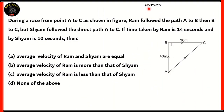This question is on physics. During a race from point A to C, as shown in the figure, Ram followed the path A to B then B to C, but Shyam followed the direct path A to C. The time taken by Ram is 14 seconds and by Shyam is 10 seconds. The options ask us to compare the average velocity of Ram and Shyam.